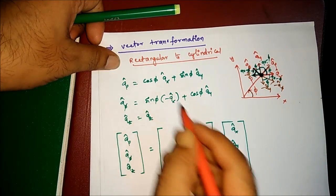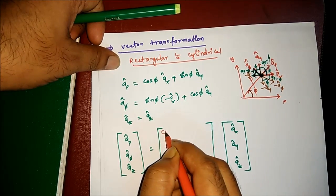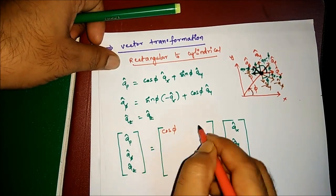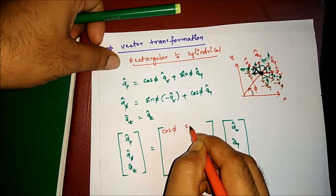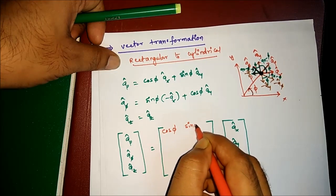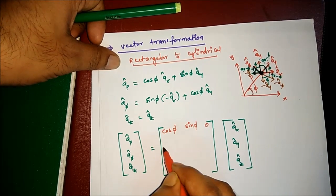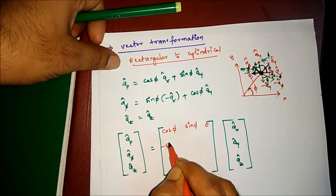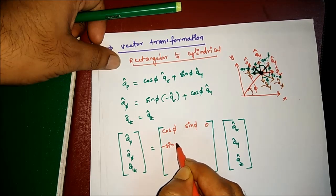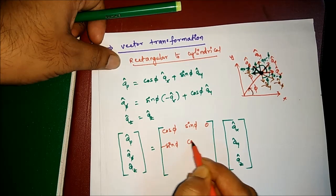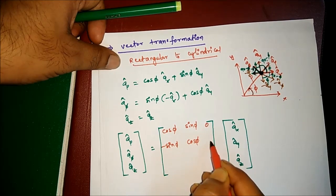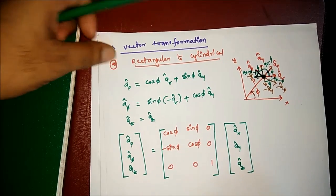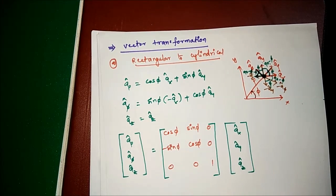The transformation matrix is: X to ρ is cos φ, Y to ρ is sin φ, Z to ρ is 0; then −sin φ, cos φ, 0; and 0, 0, 1. This is the conversion matrix from rectangular to cylindrical coordinates.